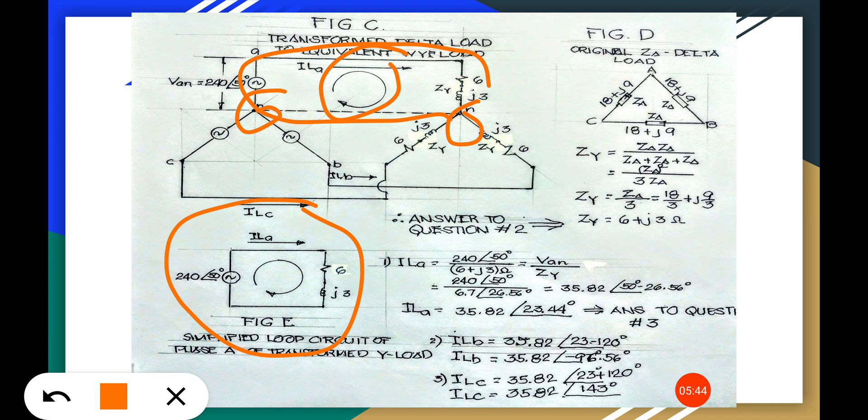And that ILa is equal to Van/Zy and the ILa becomes this one. You have this 23.54, the magnitude is 35.88.